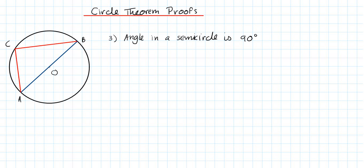And this is on the circle theorem: angles in a semicircle is 90 degrees. The angle in a semicircle is 90 degrees. So let's get started.